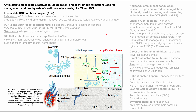One of the antiplatelets, and probably the most commonly used one, is the irreversible COX — cyclooxygenase — inhibitor aspirin, also called acetylsalicylic acid or ASA. This is used for acute coronary syndrome, so myocardial infarctions, NSTEMIs, and even unstable angina. It's also used for ischemic strokes and prevention of cardiovascular disease.